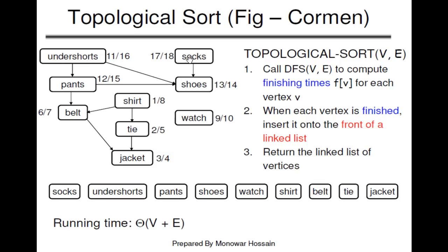So we record the vertices which have the finishing time recorded: 18 we insert first, then undershorts which is 16, then pants which is 15, then shoes which is 14, then watch which is 10, then shirt, belt, tie, and jacket. Just note the decreasing order of the finishing time and insert all the vertices into a linked list. The running time of this is exactly like DFS, which is O(V + E) — order of vertices plus order of edges.